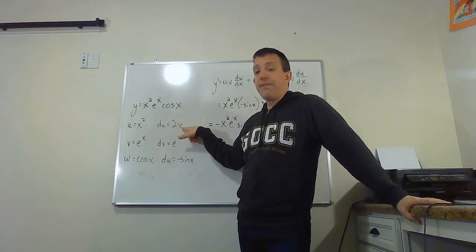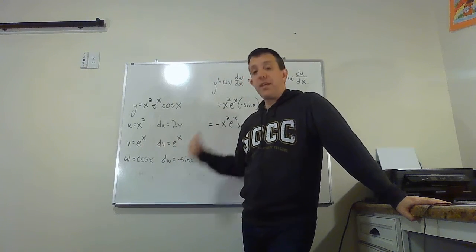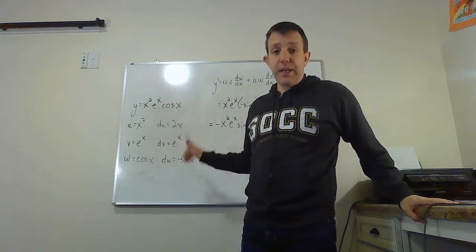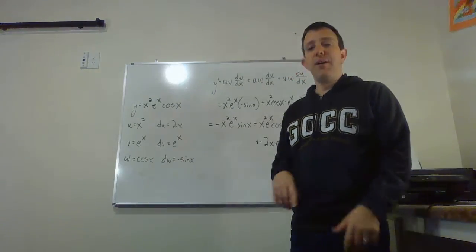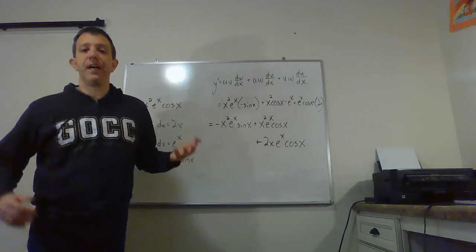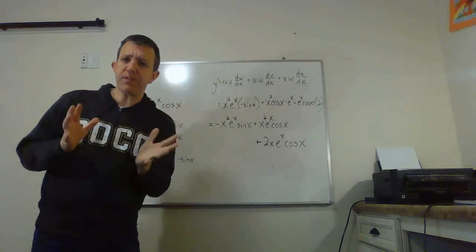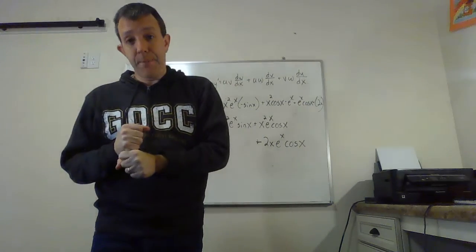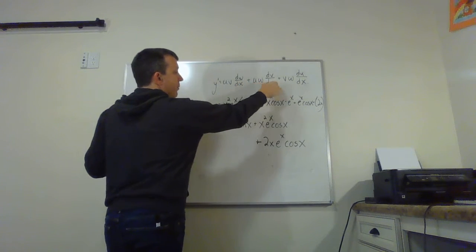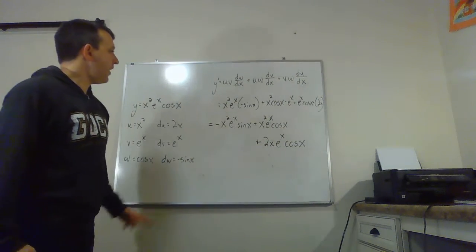For x², its derivative is 2x — drop the exponent down, subtract one from the exponent. The derivative of eˣ is just eˣ, since it is its own derivative. The derivative of cosine is negative sine — be careful not to lose that negative sign. When we have more than two things multiplied, we use one derivative at a time and multiply by the other two pieces: u·v·(dw) + u·w·(dv) + v·w·(du), all separated by addition.